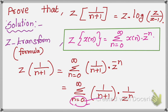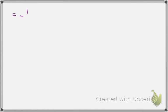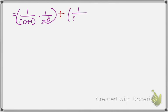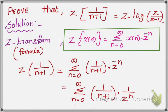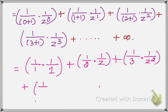Now we apply the values: n equals 0, n equals 1, etc., up to infinity. Putting n equal to 0: 1 over (0 plus 1) times C to the power 0. Putting n equal to 1: 1 over (1 plus 1) times 1 over C to the power 1. Putting n equal to 2: 1 over (2 plus 1) times 1 over C squared. Putting n equal to 3: 1 over 4 times 1 over C cubed, plus etc., up to infinity.